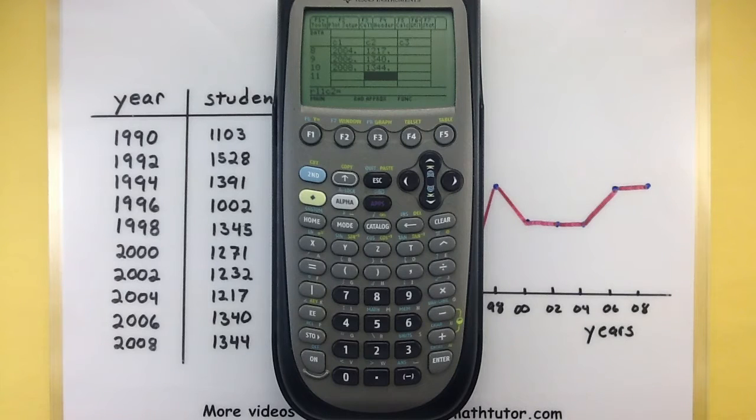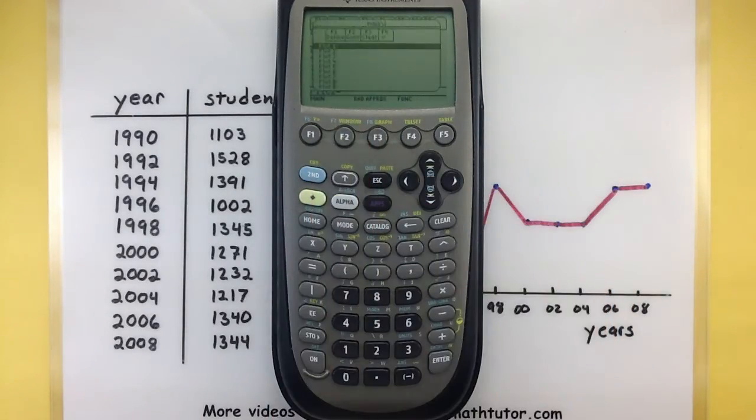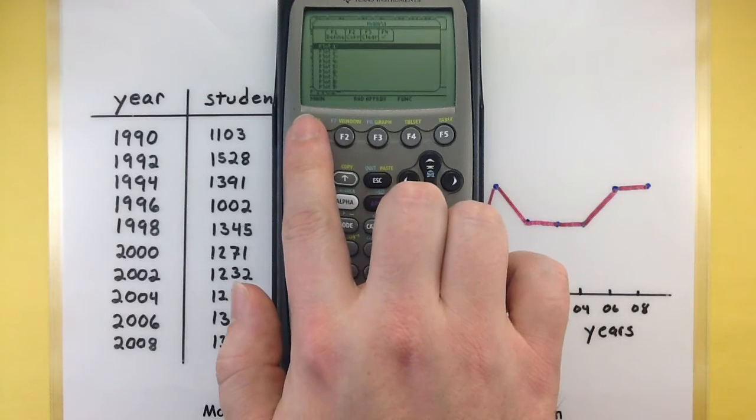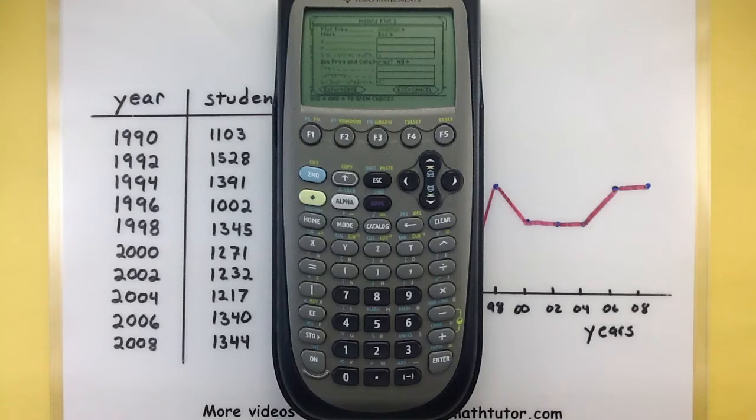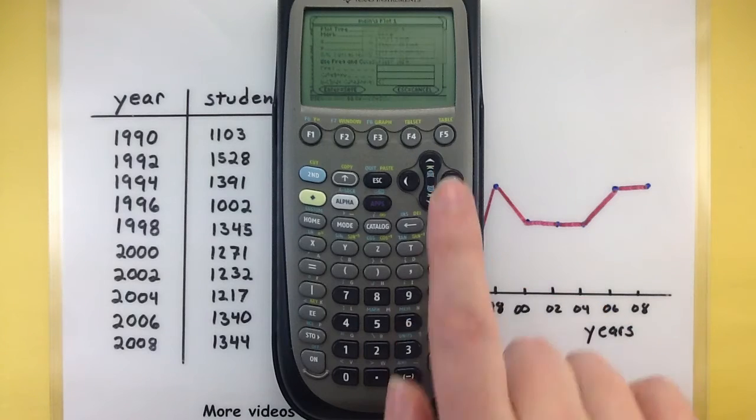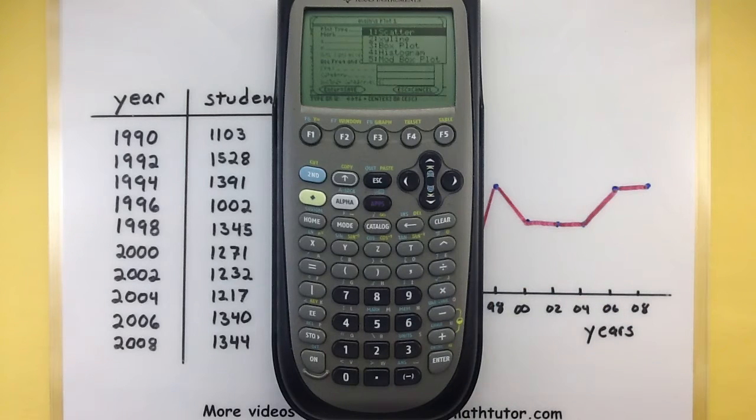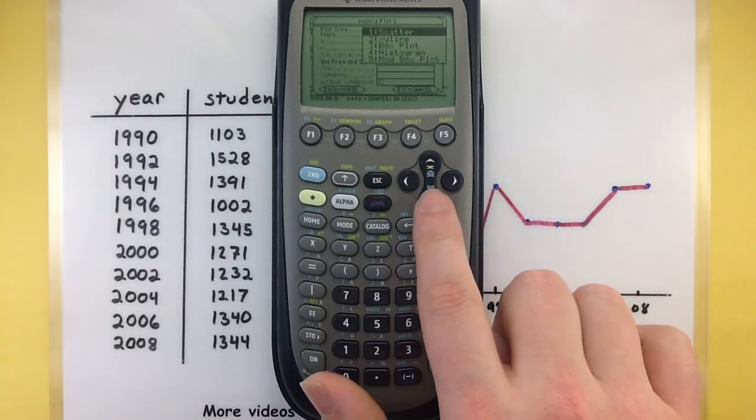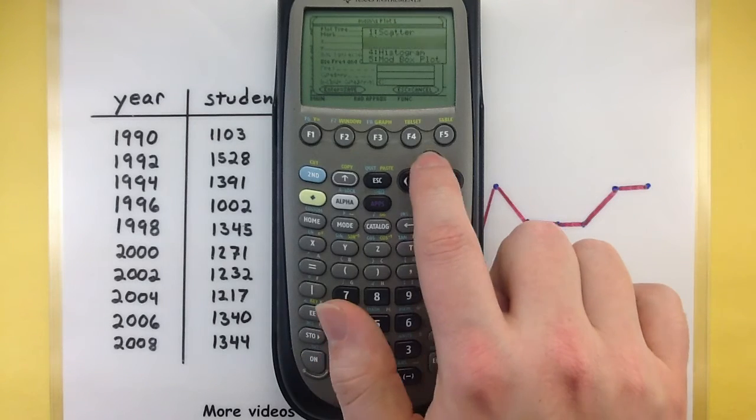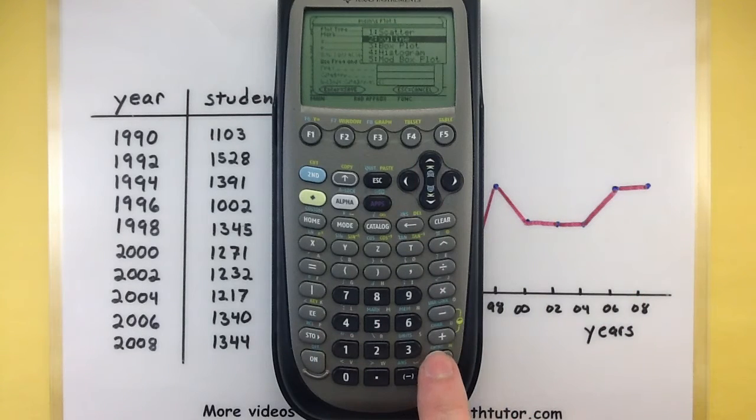Everything looks good. Let's get into our plot setup so we can tell it that we want a line chart. That's under F2 where it says plot setup, go ahead and press that. And we want to define a new one, so press F1. Our very first option is what type of plot we are making. It's set to scatter right now, but press your right arrow button. So we can select the second option that says x, y line. Perfect, I'll hit enter.